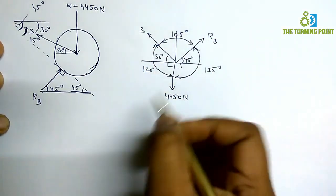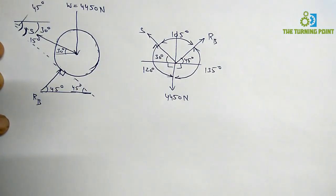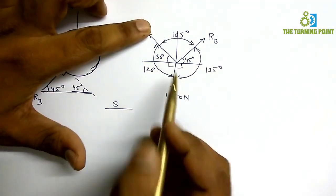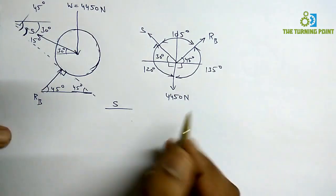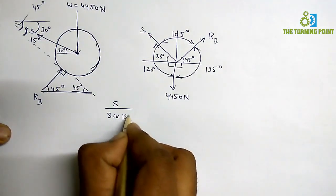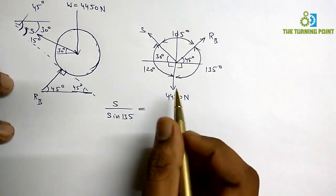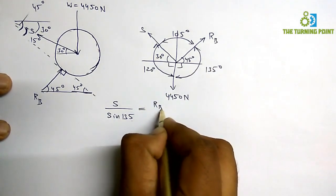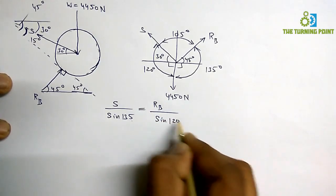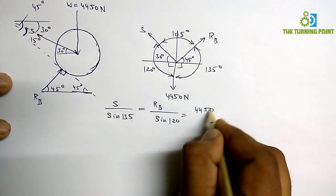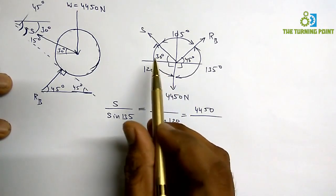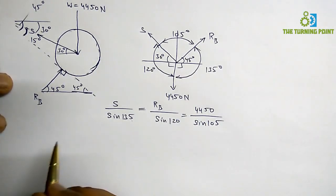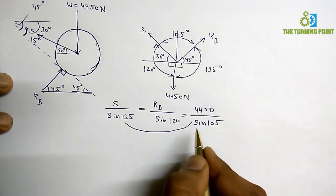Three forces are acting, so I can apply Lami's Theorem. From Lami's Theorem: S divided by sine of the angle between the other two forces — RB and 4450 N — and the angle between those two is 135 degrees. RB divided by sine 120 is equal to 4450 divided by sine 105 degrees.